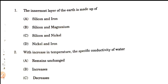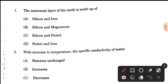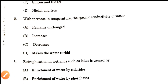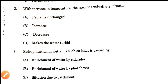Question number 1: The innermost layer of the earth is made up of what? The innermost layer of the earth is the core, and it is composed of the heaviest minerals. This central mass is mainly made up of nickel and iron, which we call NIFE — N-I-F-E, nickel and ferrum. So nickel and iron is the answer. Option D is correct.